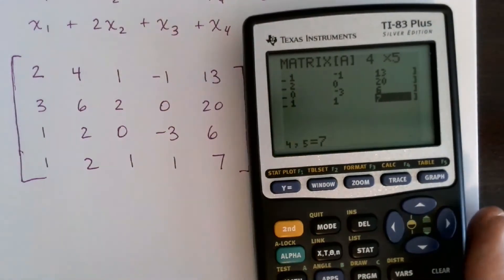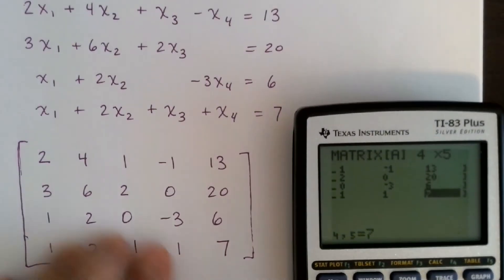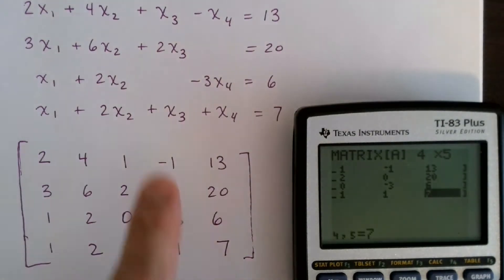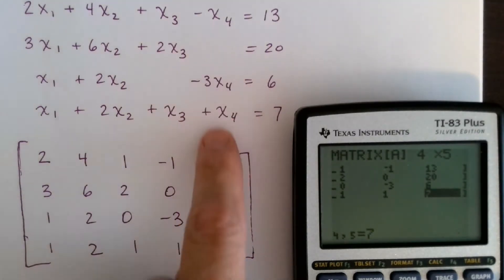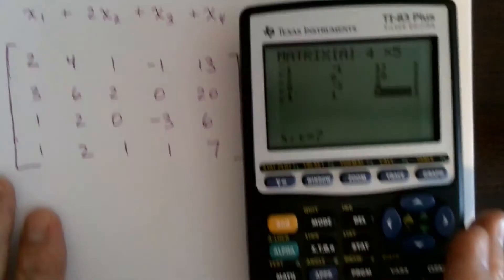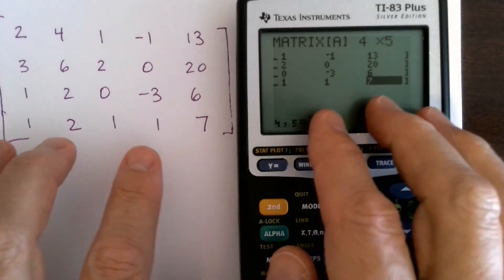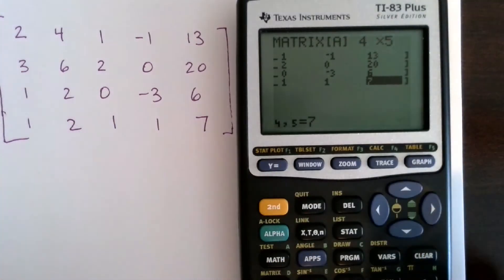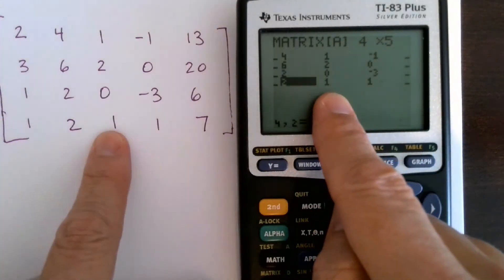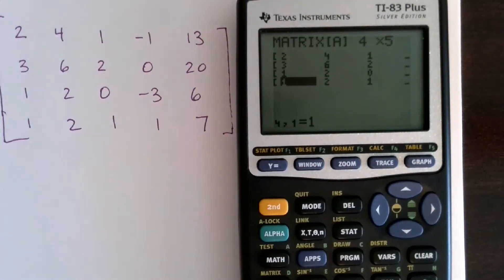A very common mistake is there are a lot of numbers here. Double check — make sure you've written the augmented matrix correctly. Make sure your constants 13, 20 (shown as 26 on screen), 6, 7 are correct, and your coefficients — negative 1, 0, negative 3, 1 — are matched up. Double check what you've entered in the calculator against what you have on paper, because one single different number will mess the whole thing up. I like to go back through column by column and verify: 1, 2, 0, 1; then 4, 6, 2, 2; and the first column should be 2, 3, 1, 1.